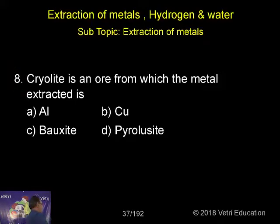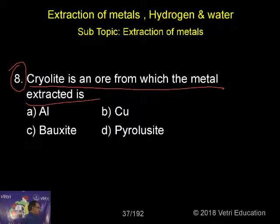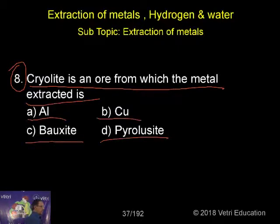Next question. Question number 8. Cryolite is an ore from which metal is extracted? A. Aluminium, B. Copper, C. Oxide, D. Pyrolozyte.